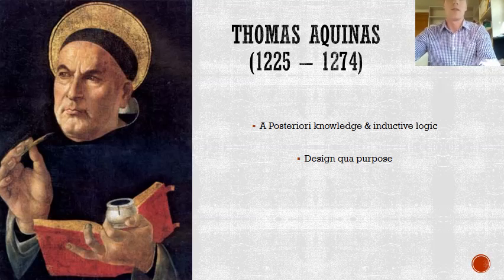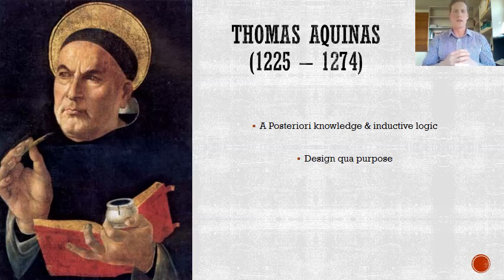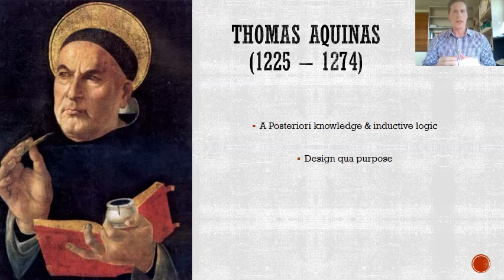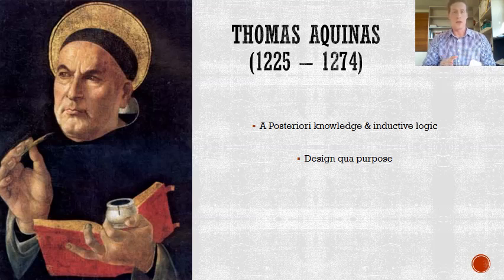Our next perspective is from Thomas Aquinas, who was a scholar living in the 13th century. He sought to put forward a collection of related ways of demonstrating the existence of God through reason and through logic. His fifth way argues through a posteriori knowledge and inductive logic that intelligent objects, like an arrow of an archer, can only be aimed towards a goal, like the target of an archer, with the guiding presence of an intelligent being — being the archer. This intelligent being, he argues, is God. It is a design qua purpose argument, because it seeks to show that the universe has direction and a goal that is enabled by God.